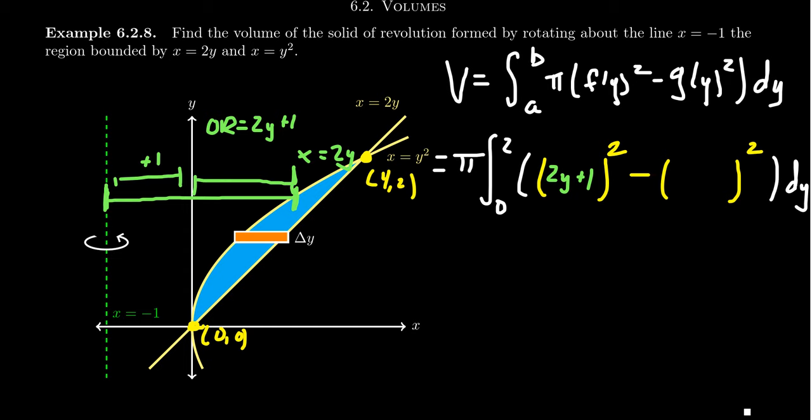On the other hand, if we consider the inner radius, we want to go to the distance from x equals negative 1 to this right here. This point right here has the coordinate (x, y), where specifically the x-coordinate is going to be y squared. And this over here has the x-coordinate of negative 1. And so the inner radius is going to be the x-coordinate, y squared, minus the axis at negative 1. So you get y squared plus 1.